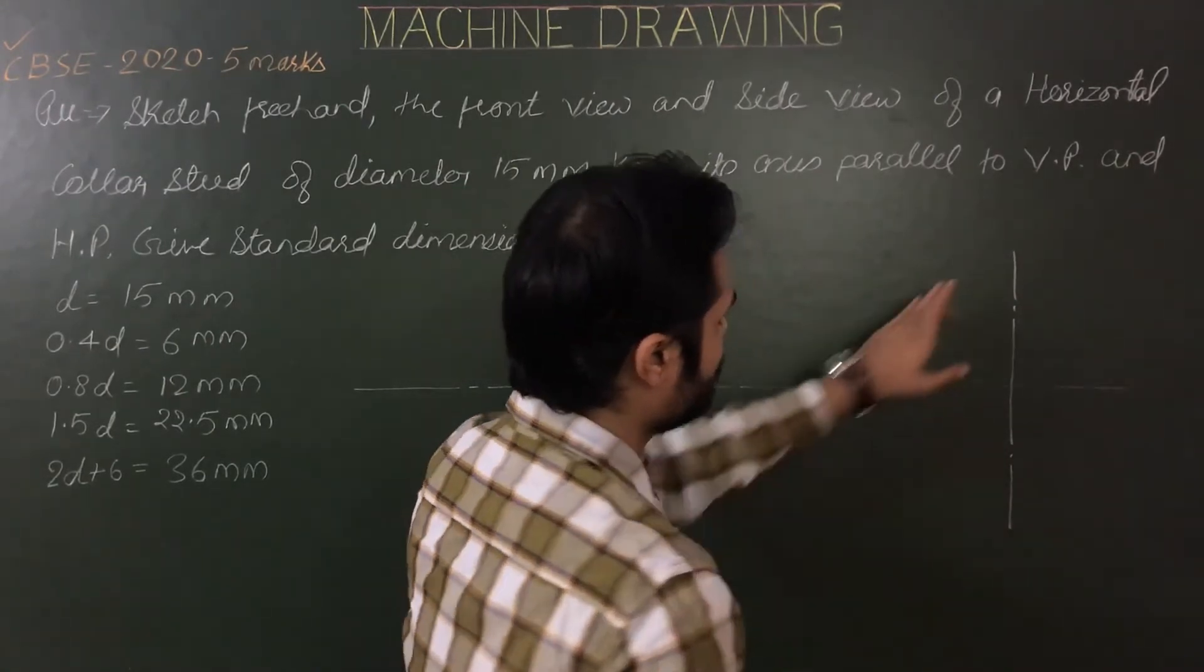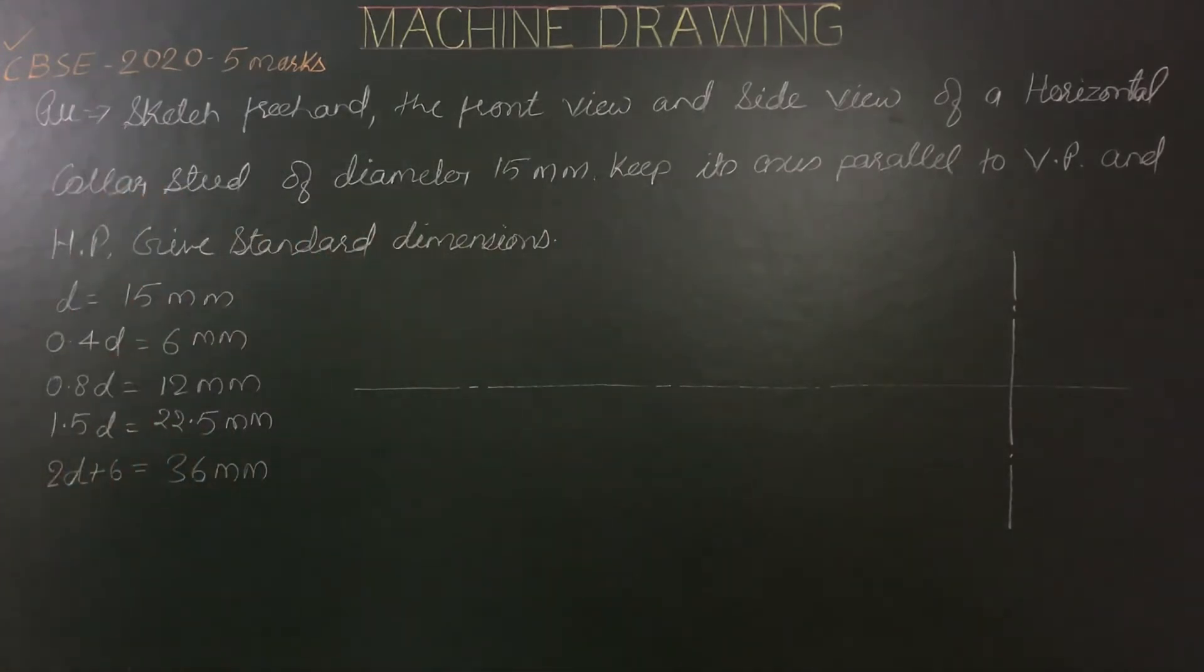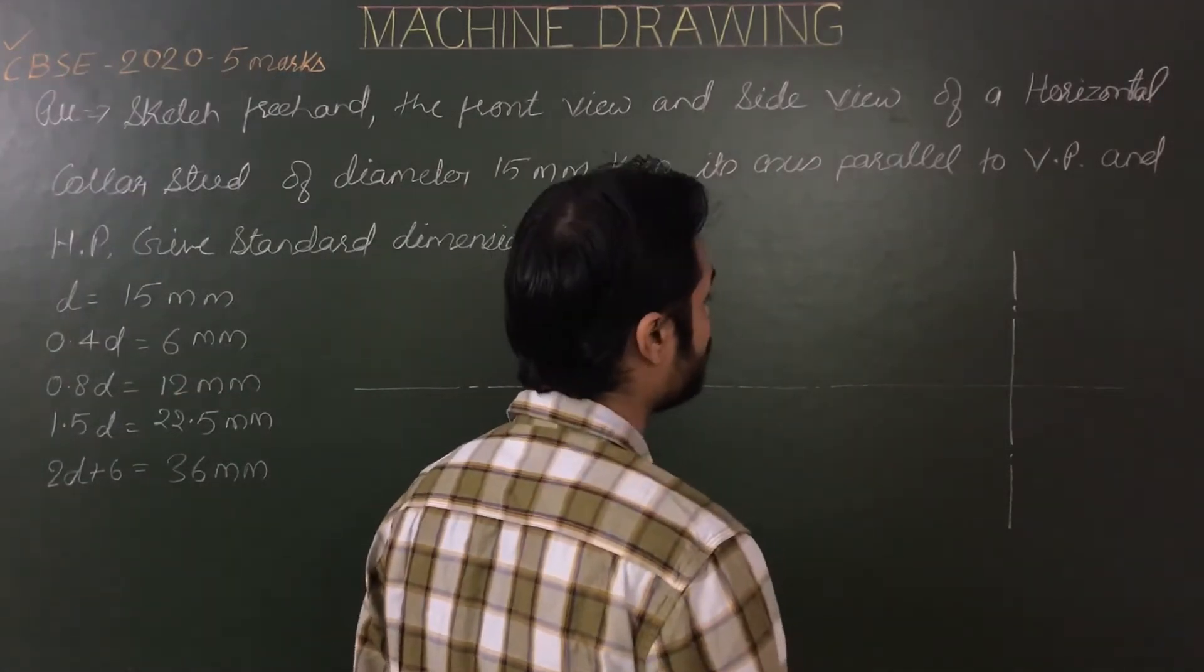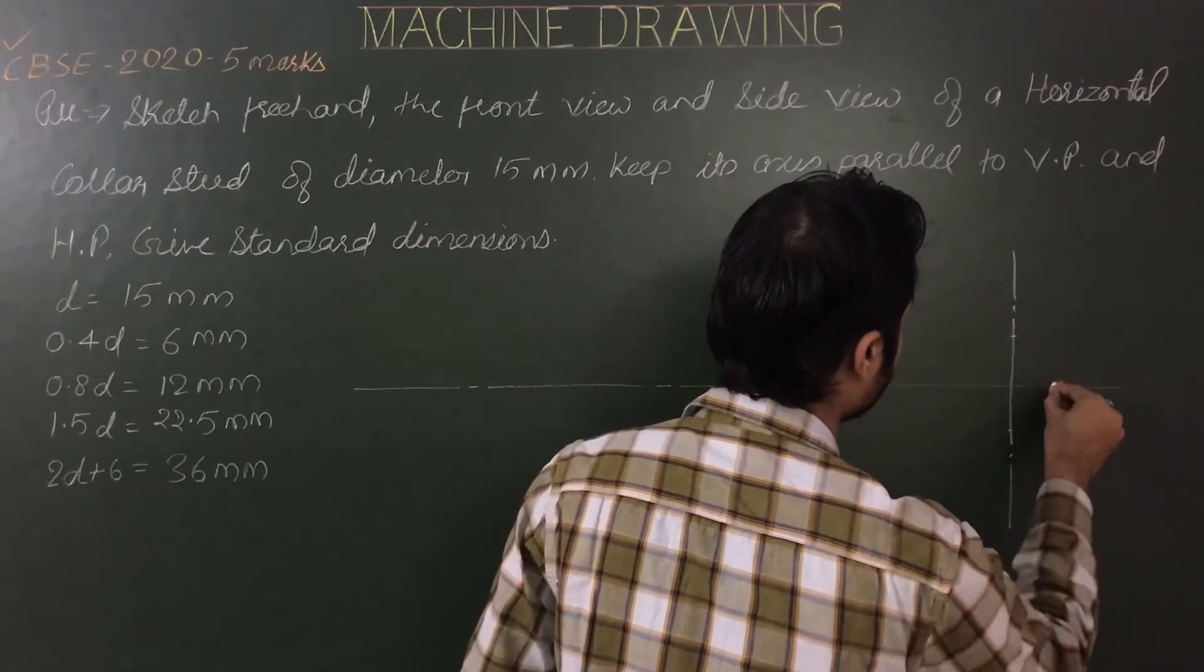Draw another chain line or center line perpendicular to first center line for side view. Now we know that we have to draw two circles of dia 0.8d and d for threaded part. In collar stud we have diameter of collar 1.5d, so we are required to draw three circles. For representation of external threads on the stud, the circle with dia 0.8d will be partially interrupted or incomplete.